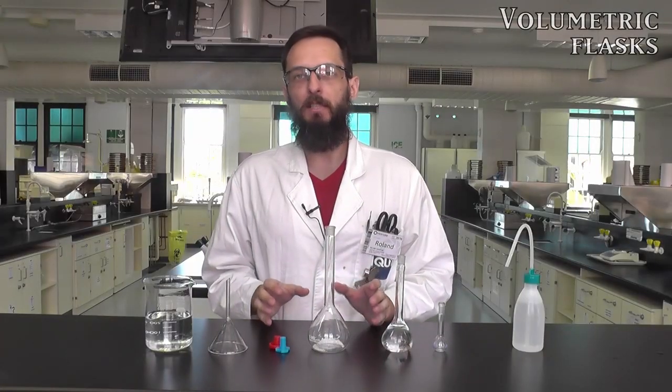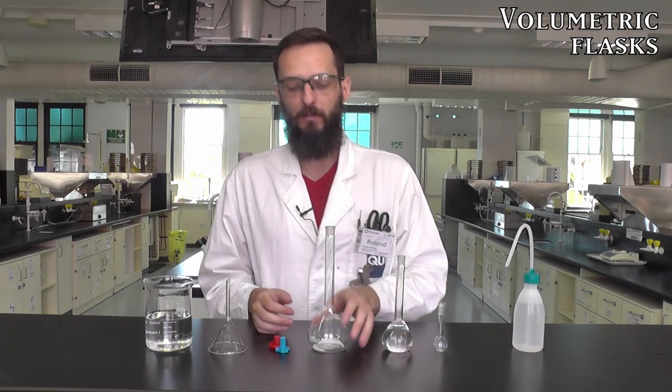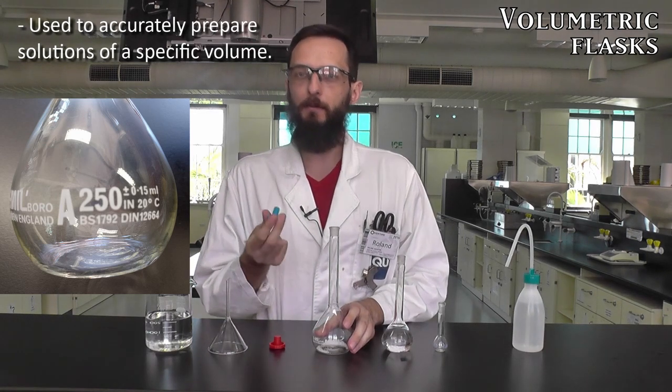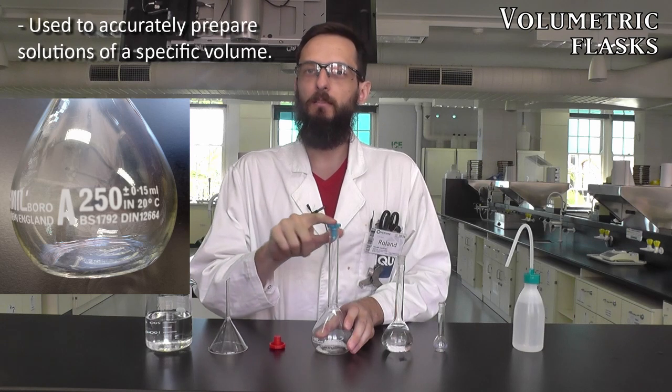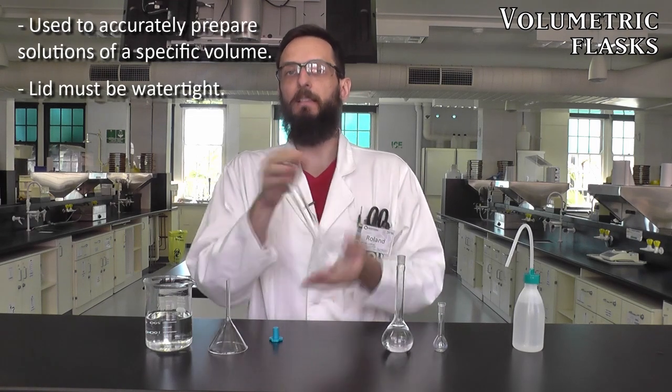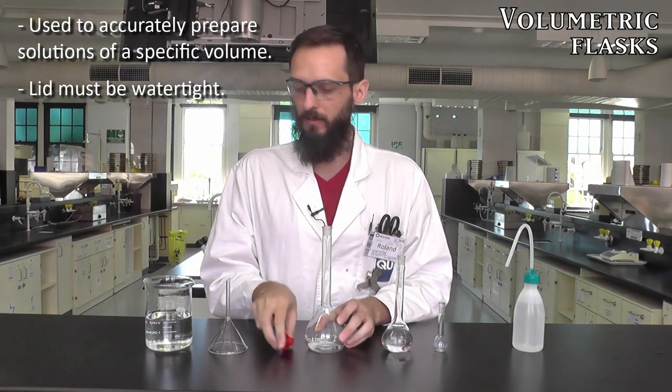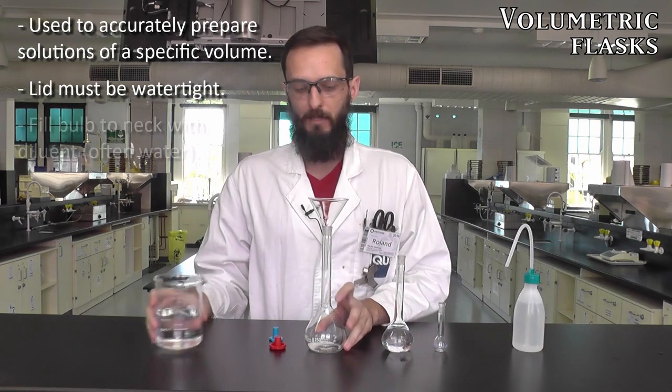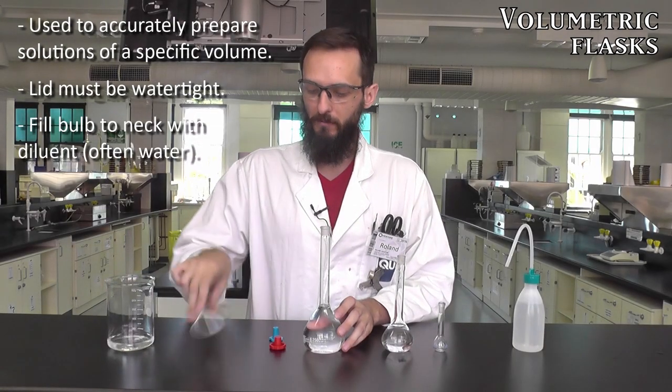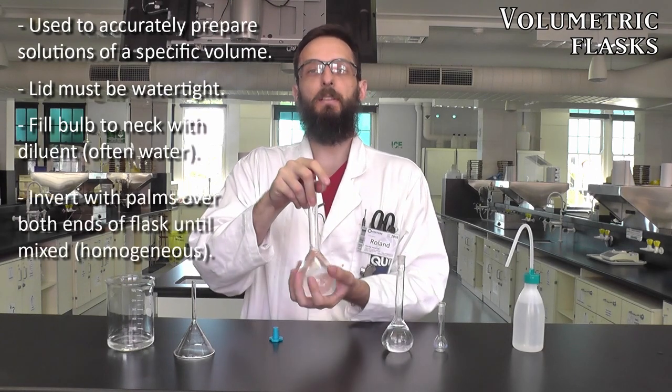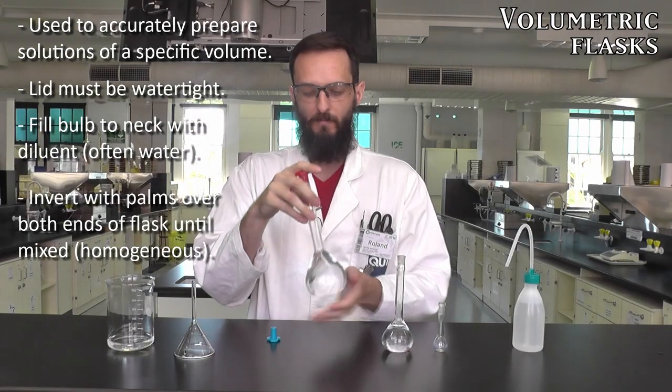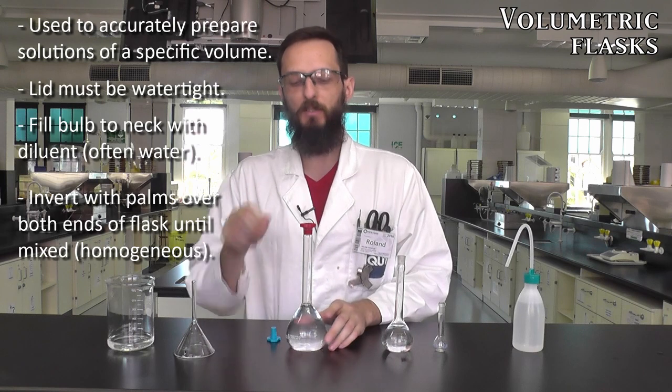Next up we have volumetric flasks. These are used to very accurately measure a specific volume of liquid. You can see it's determined by the label on the front. It's very important when you use volumetric flasks that you pick the correct lid. For example this blue lid, if I stick it in the top, it rattles around. It's important that the lid is very snug because as soon as you were to invert this with any liquid inside you would have a spill. So the way we fill these is I'll take my funnel and fill up to the top of the bulbous part of the volumetric flask, and then I'll take out the funnel, stopper it up, and begin inversion. I do that by placing my palm on the top and bottom and just inverting like so.